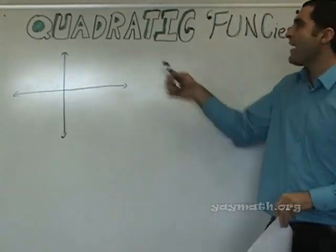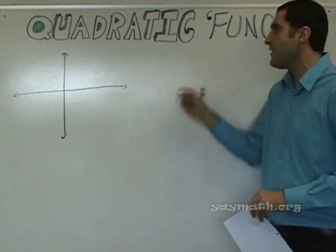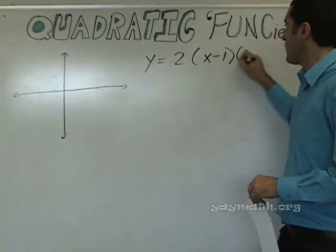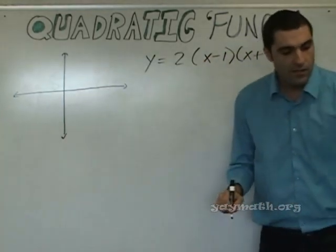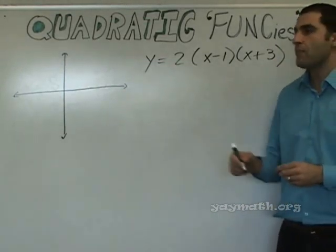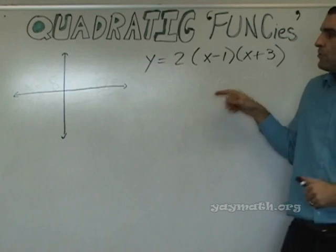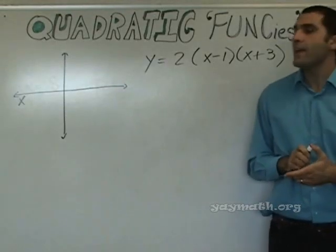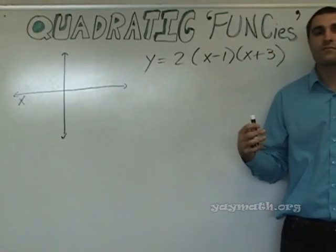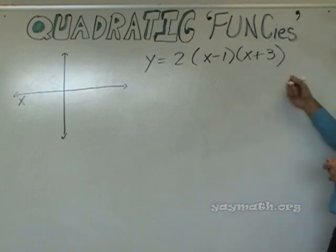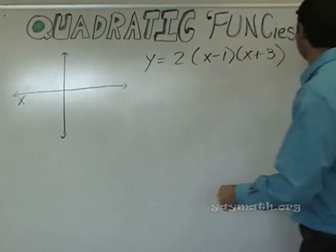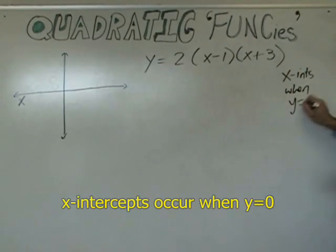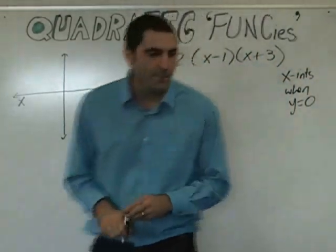On the top of your paper, we have examples of a quadratic function. Let's talk about it. You can see where it says y equals 2 times x minus 1, x plus 3. Now, if we were to graph this, it would have two x-intercepts, okay?